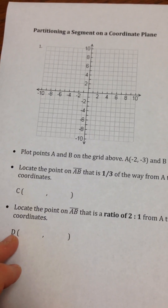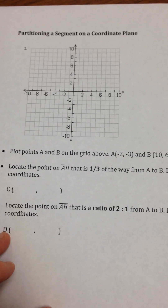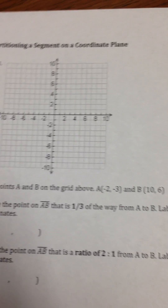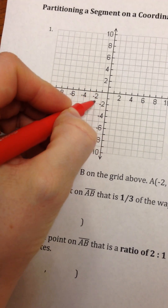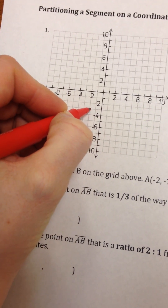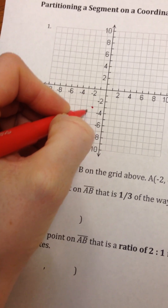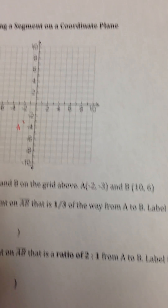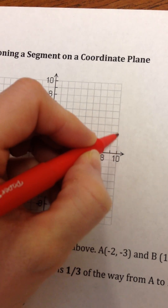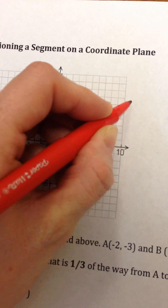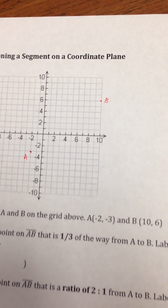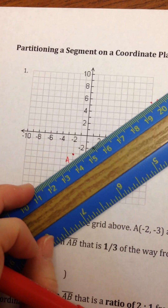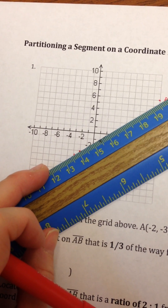The first thing I want you to do is plot two points on the grid above. Point A is going to be at negative two, negative three. We'll label that with an A. And plot point B which is at ten, six. Go ahead and take your ruler and connect them. We're going to make line segment AB.